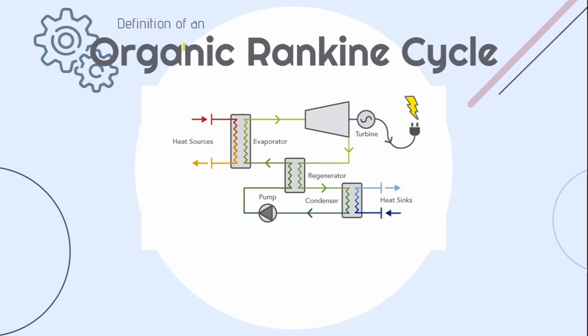Instead of generating steam from water, the organic ranking cycle system vaporizes an organic fluid characterized by a molecular mass higher than that of water which leads to a slower rotation of the turbine, lower pressures, and no erosion of the metal parts and blades.